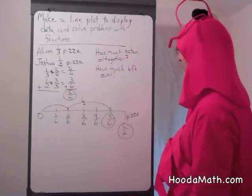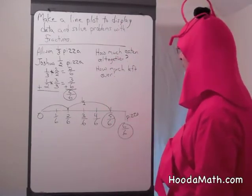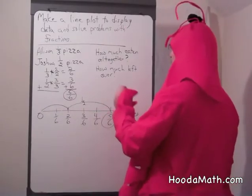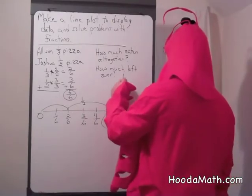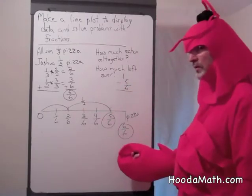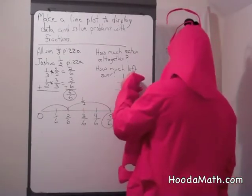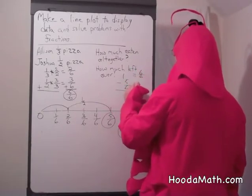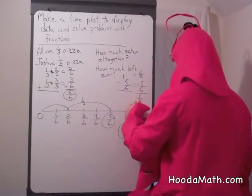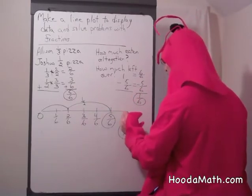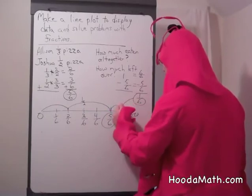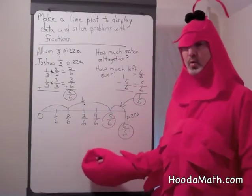How much is left over? You can see this on the line plot, or you can subtract: 1 minus 5 sixths. As you know, there are 6 sixths in 1. Take away 5 sixths, which gives you 1 sixth. Right here — 1 take away 5 sixths would give you this area right here, which is equivalent to 1 sixth.